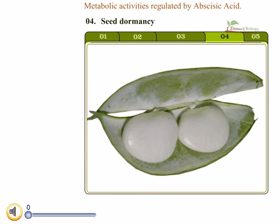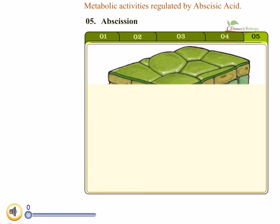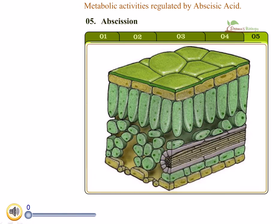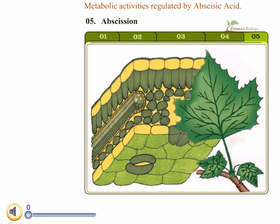Abscission: abscisic acid is responsible for developing an abscission layer between different plant parts and making them fall. This is the characteristic feature of abscisic acid activity on a plant and is most active in leaf abscission. Abscisic acid concentrations increase when there is a water deficit, and the growth of the abscission layer is accelerated. As a result, the plant removes body parts not needed at that time, like leaves.